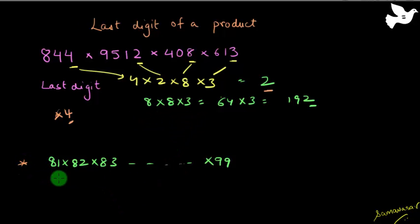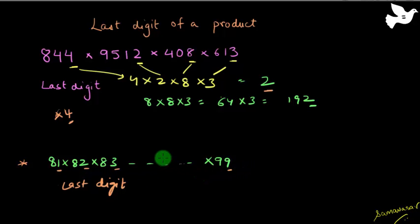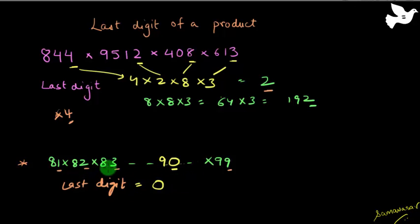In an exam, if you get a question like 81 x 82 x 83 and so on up to 99, what is the last digit? This is more a question of presence of mind. The last digit is simply the multiplication of the last digits of all these numbers, and if you see, there is a number 90 with unit digit 0 sitting right in between. Zero multiplied by anything is simply 0, and that's your answer. So in last digit questions, look out for numbers which end in 0.